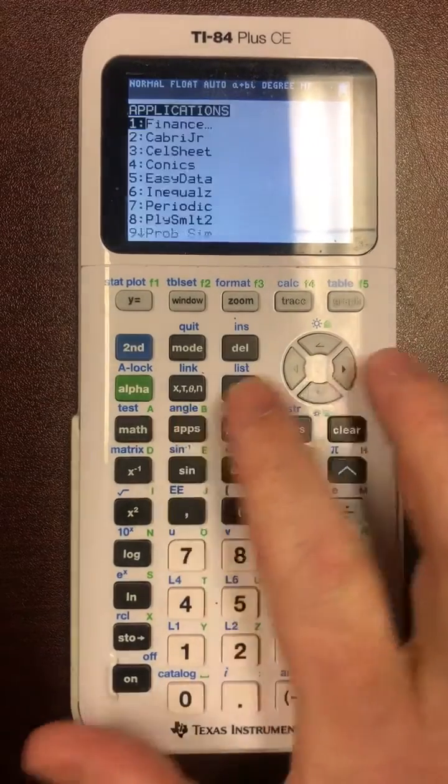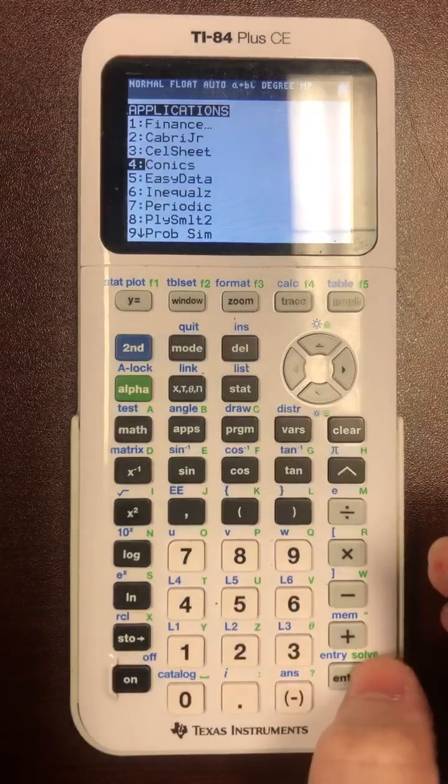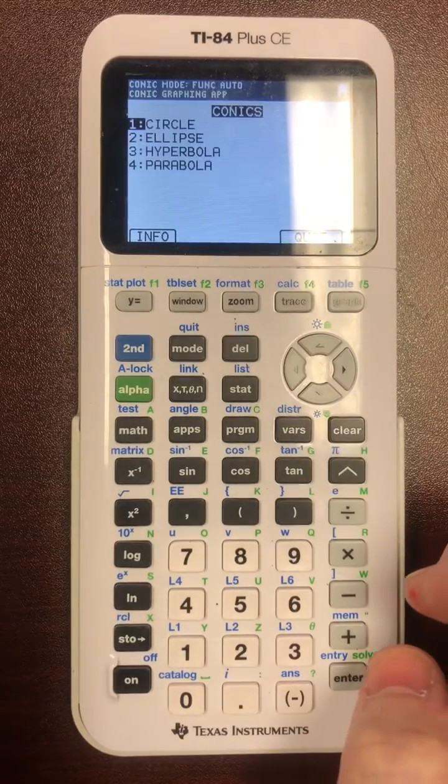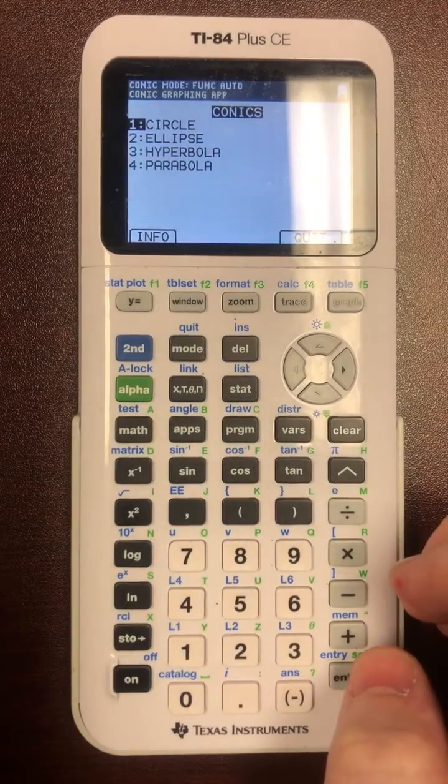You hit the apps button and you scroll down and choose conics. All four conic sections - circle, ellipse, hyperbola, and parabola - are on here.